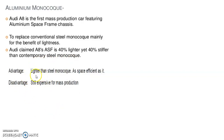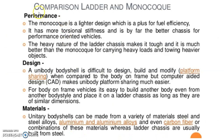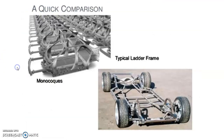The aluminum frame is lighter than steel monocoque but still expensive for mass production. Carbon fiber monocoque is the most sophisticated material, used in aircraft, spaceships and racing cars because of its superior rigidity-to-weight ratio. Road cars featuring carbon fiber body panels include Ferrari and Porsche. Kevlar, developed by DuPont, offers the highest rigidity-to-weight ratio among carbon fiber materials — army helmets are made of Kevlar. Kevlar can also be found in body panels of many exotic cars. A quick comparison between the typical ladder frame and monocoque structure is shown here.